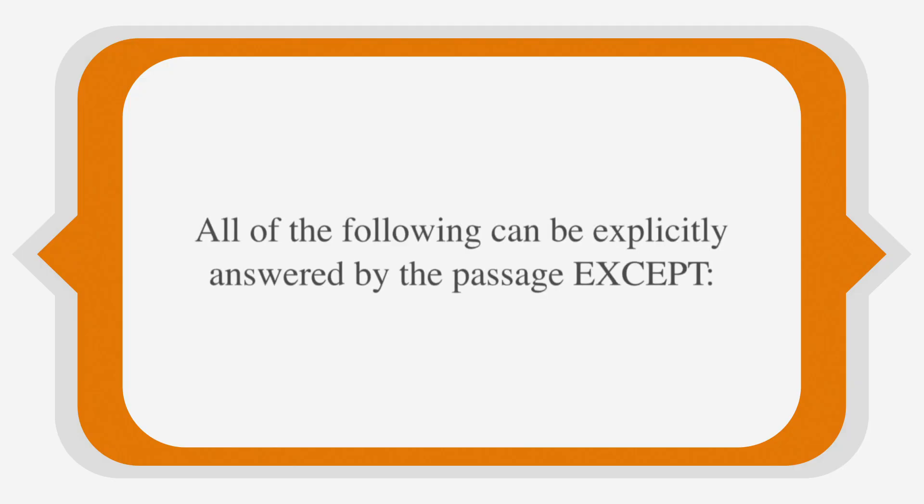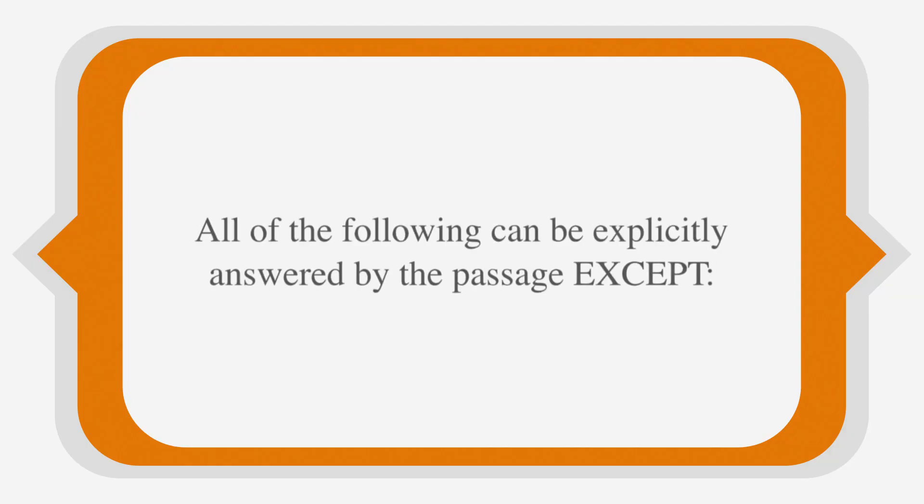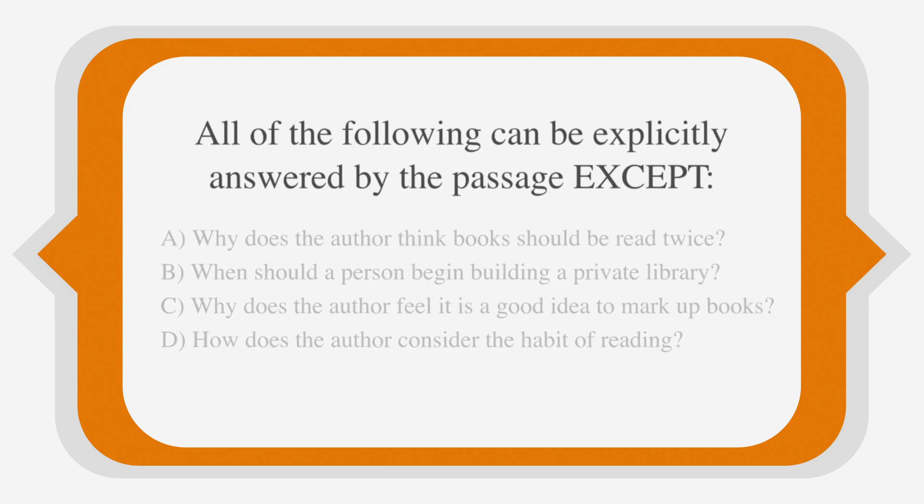So now let's bring up just the question stem. All of the following can be explicitly answered by the passage, except... Okay, so we'll walk through the answer choices in a moment, but for now, we just need to know that three of them are going to be details that were stated in the passage explicitly. The question asks you to find the exception to what is explicit or clearly stated, so we want to find the answer choice that's an implied question. Let's start by eliminating those answer choices that focus on specific details.